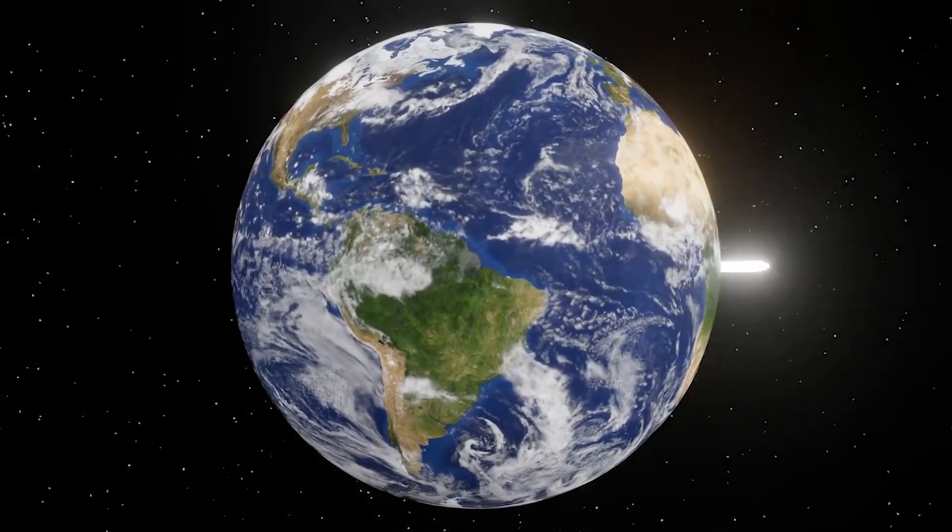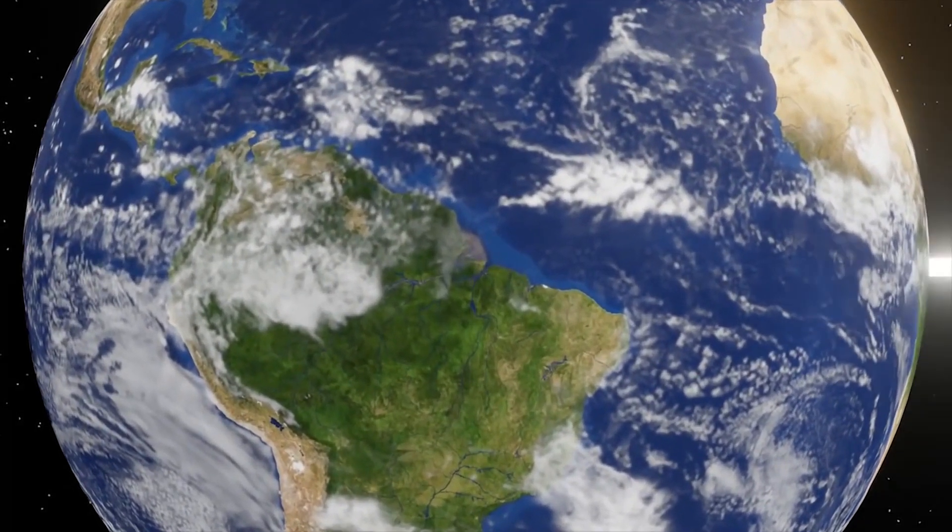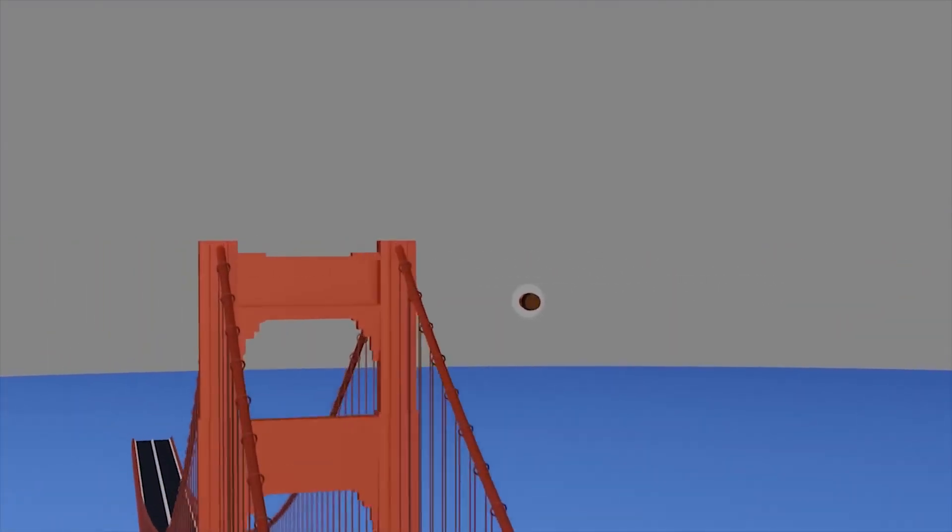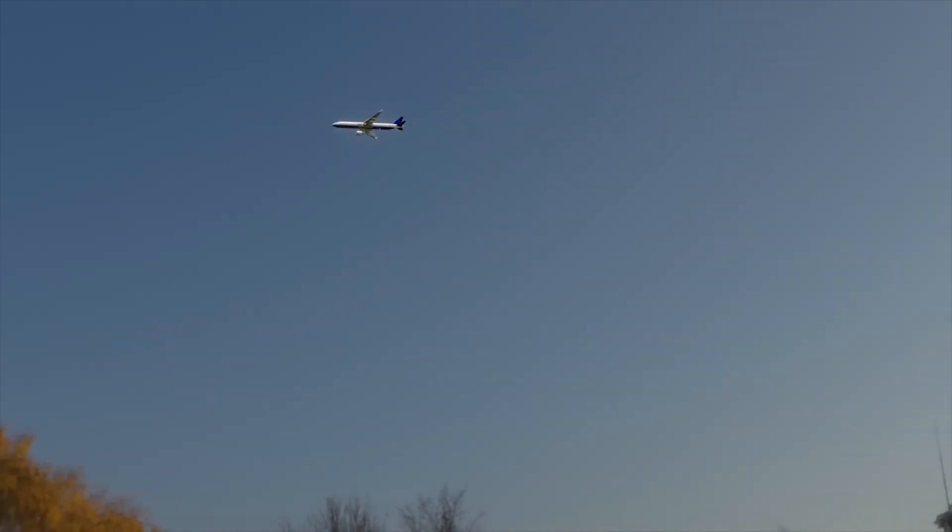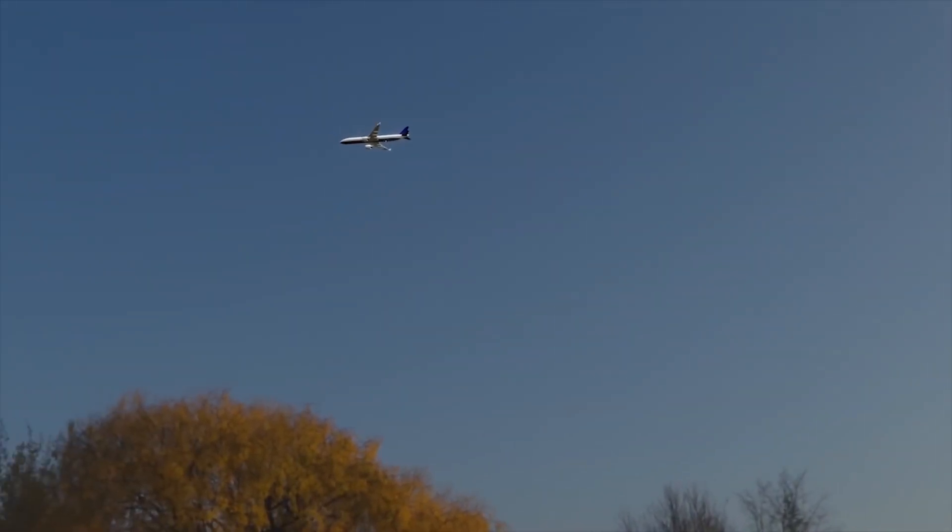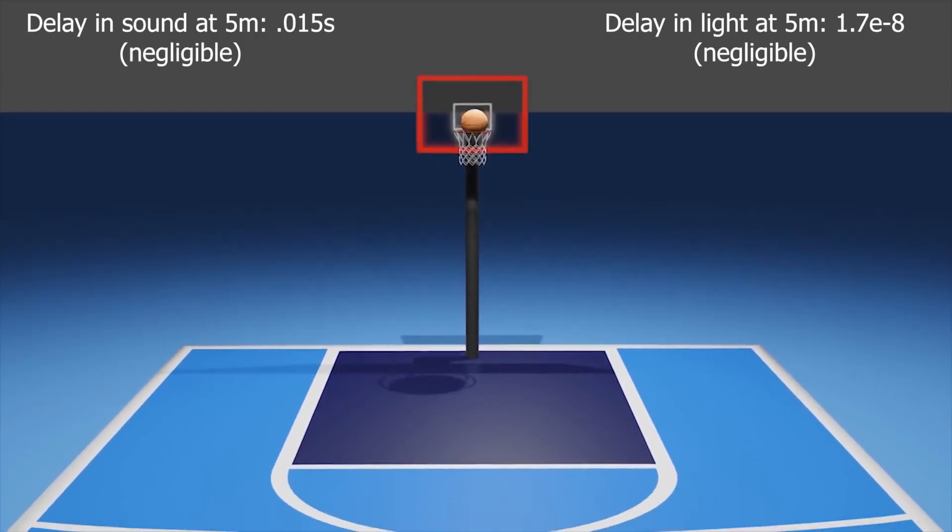The problem with trying to surpass the speed of light is that as you go faster, the more kinetic energy you have. But relativity tells us that energy is the same as mass. So the faster you go, the more massive you become. And yes, this means that a moving baseball has more mass than one standing still. But that's a tiny effect.